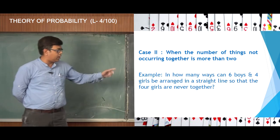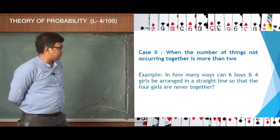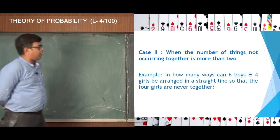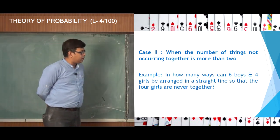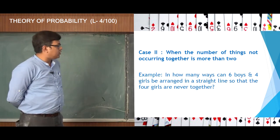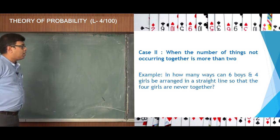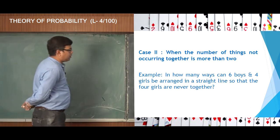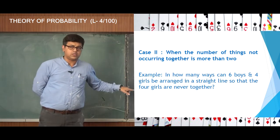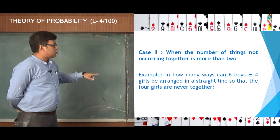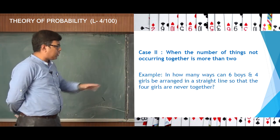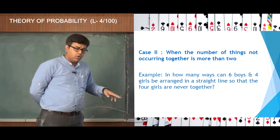I will be discussing this with an example. The example says: in how many ways can 6 boys and 4 girls be arranged in a straight line so that the 4 girls are never together? The only way to answer this is that since I have to put a restriction on the girls — 4 girls will never be together — the only possibility is that they sit in an alternate arrangement.